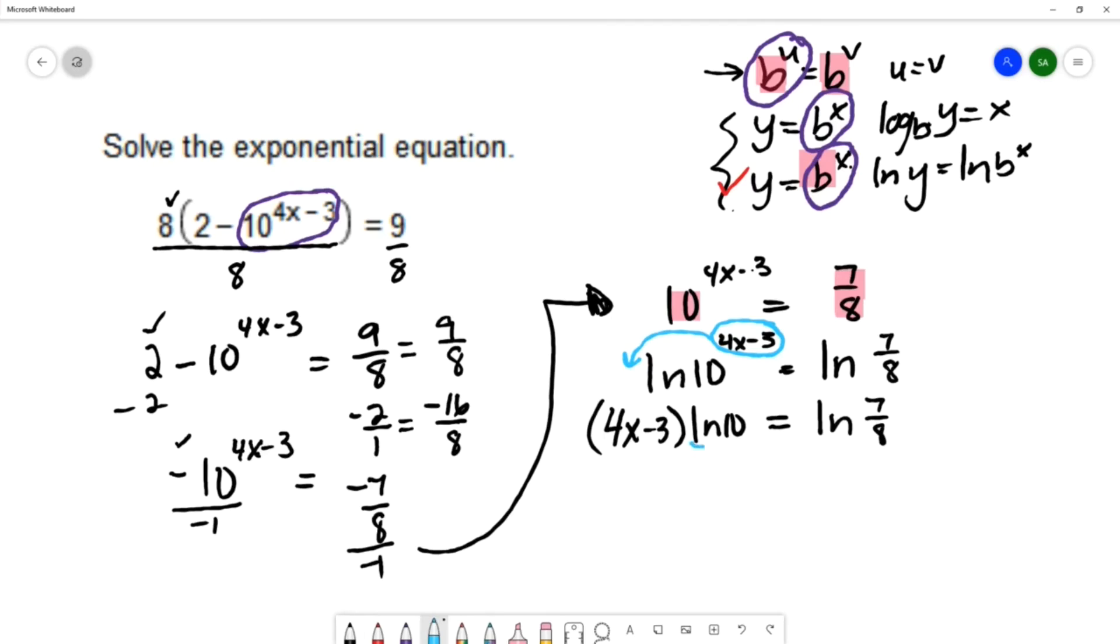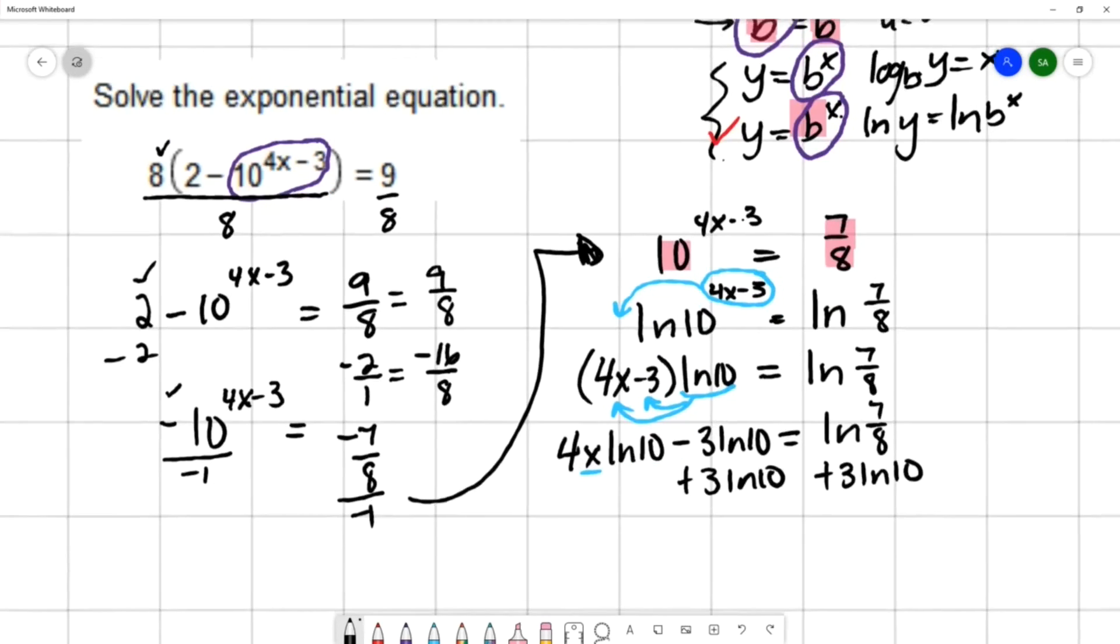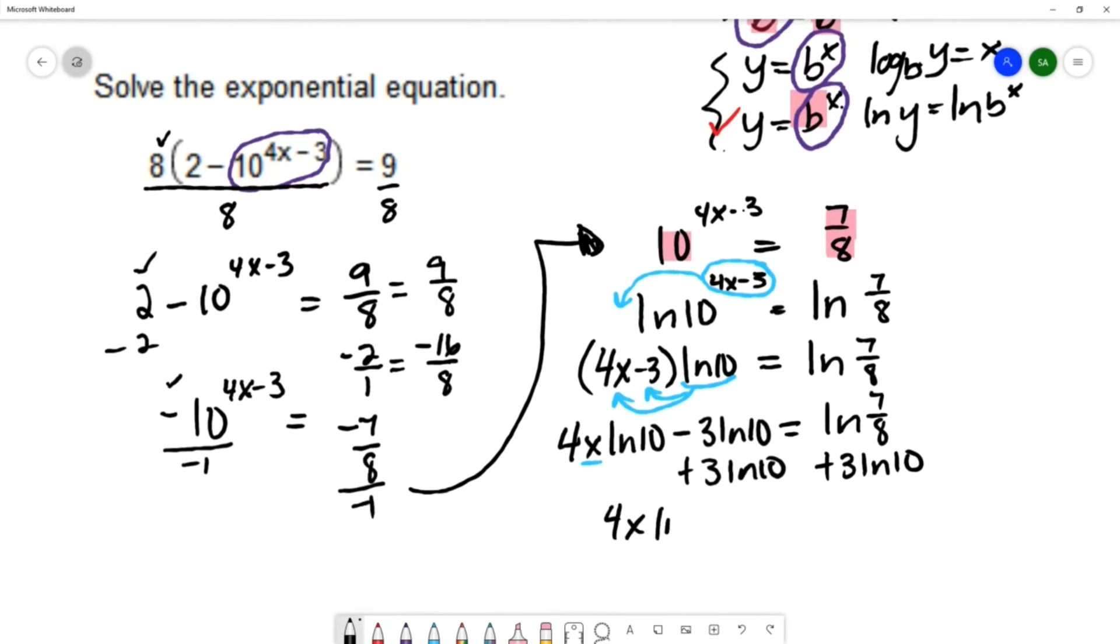I'll use the distributive property and distribute natural log of 10 to both terms inside the parentheses. That's 4x natural log 10 minus 3 natural log 10 equals natural log 7 eighths. I want to isolate x, so I'll add 3 natural log 10 on both sides.